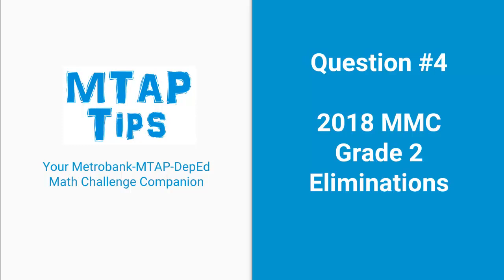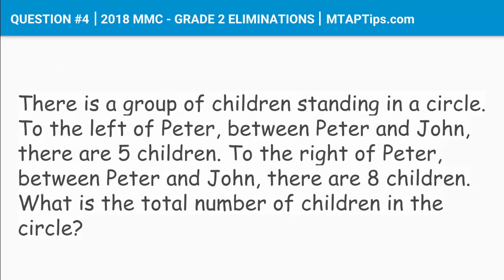Question number four for 2018 MMC grade 2 eliminations. There is a group of children standing in a circle. To the left of Peter, between Peter and John, there are five children. To the right of Peter, between Peter and John, there are eight children. What is the total number of children in the circle?